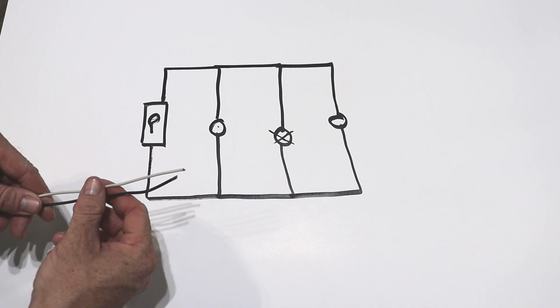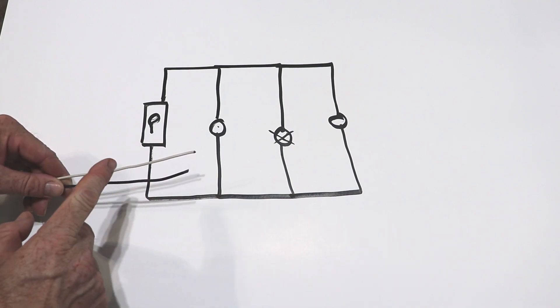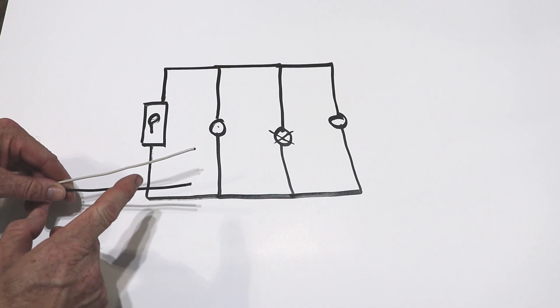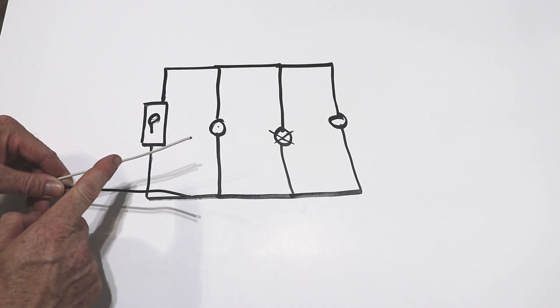And remember in your Romex wire, you have two conductors. There's three wires. The bare ground wire is just a ground, it's not a current carrying wire. But you have your black hot wire, and you have your white neutral wire.